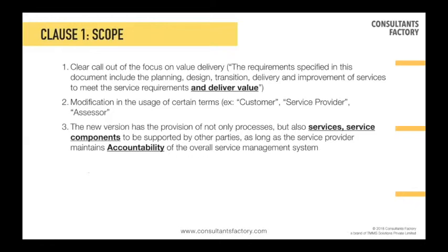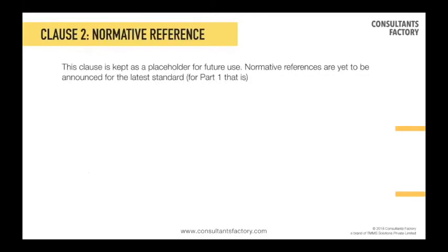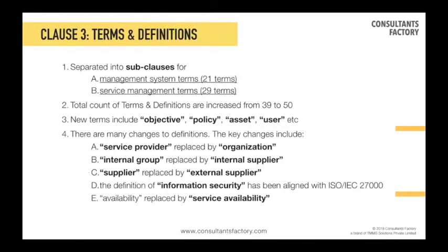Some words have been modified. In 2018, we don't use the term 'service provider' anymore — we call it 'organization.' And 'customer' is also a word we have started using; earlier we used to use the word 'organization' for that. That has changed to 'customer,' etc. Moving on, normative reference is just a blank placeholder, so don't worry about that.